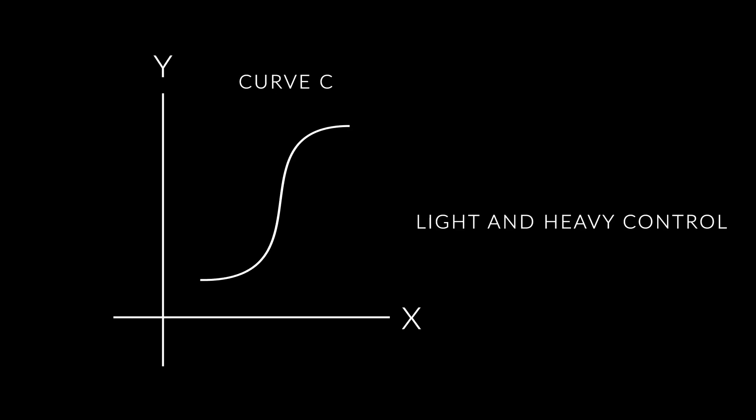Now here are three more examples. First curve C. This one curves slightly in the lower and higher ends, which gives you more control on the thinner and thicker parts of the stroke.